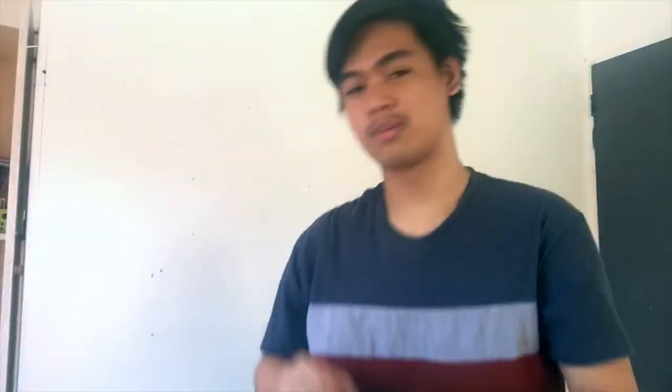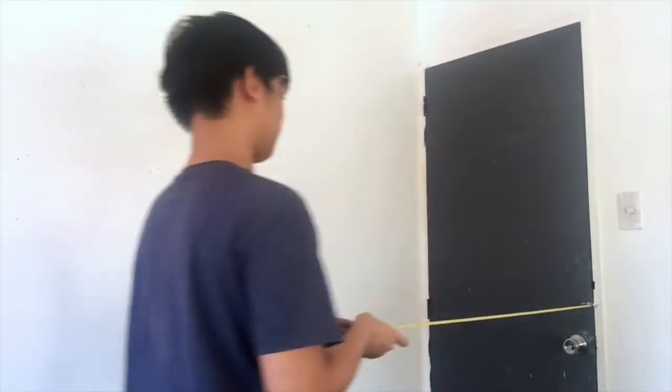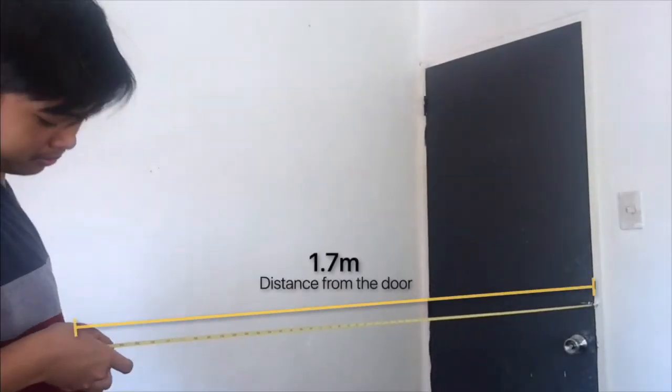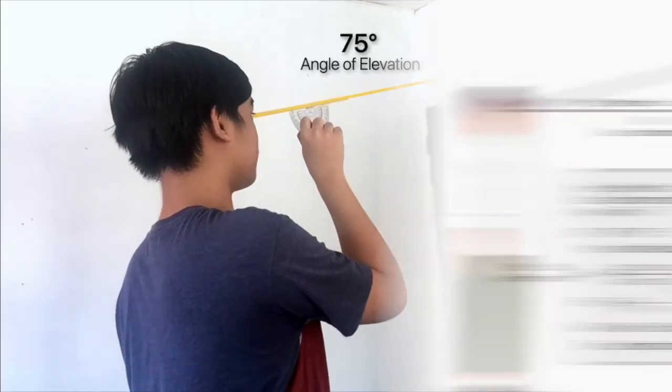Here's a tutorial on how to use it. First, measure your eye height starting from your feet. Second, measure the distance of your spot from the door. And lastly, measure the angle using the hole of the straw in your clinometer.